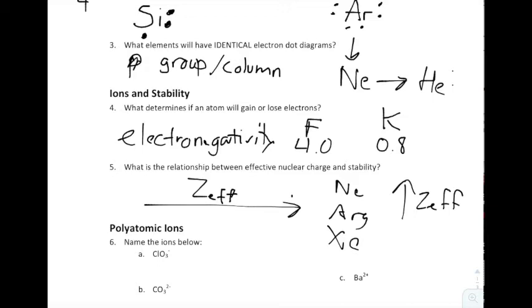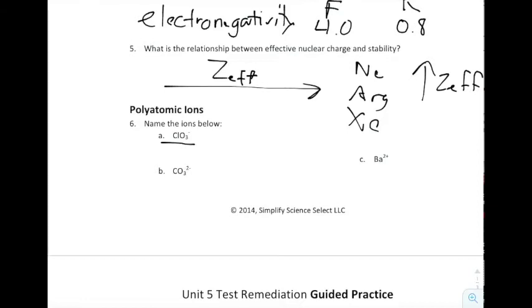Next, it wants you to name these ions below, and this is something that you should be familiar with. This is a polyatomic ion, it's going to be a chlorate. There's nothing you can do other than memorize those. For example, this one right here, you should know, is carbonate. And then finally you have, this is just an element by itself. And when you have an element by itself, we just call it its name, and in this case it is barium.